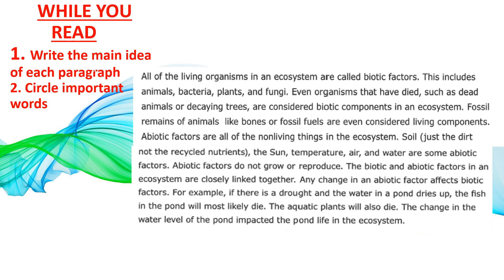The biotic and abiotic factors in an ecosystem are closely linked together. Any change in an abiotic factor affects biotic factors. For example, if there is a drought and the water in a pond dries up, the fish in the pond will most likely die. The aquatic plants will also die. The change in the water level of the pond impacted the pond life in the ecosystem. Now pause your video, write the main idea of this paragraph, and circle important words.